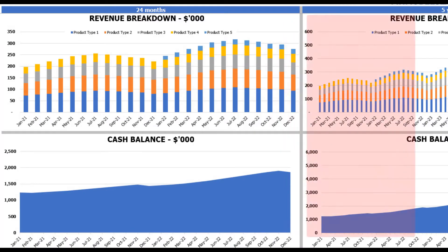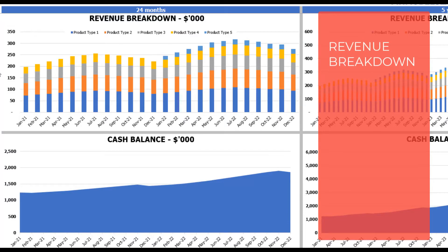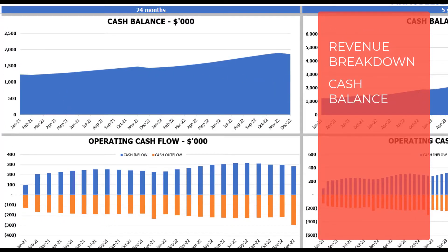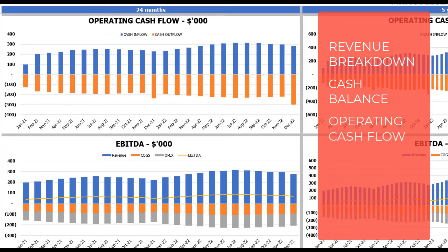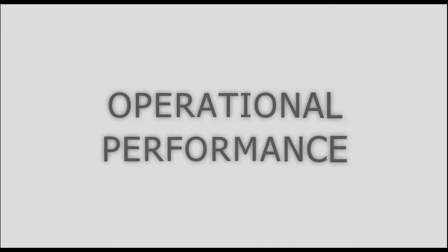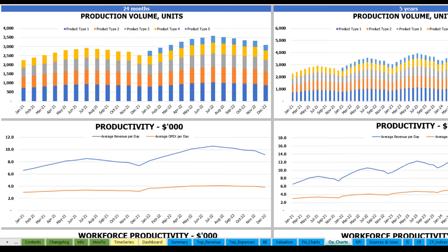On the financial charts tab you may see the main financial outputs in graphical form. On the left side you see charts for 24 months, and on the right side charts for five years or 60 months. The top charts show revenue breakdown by product type. The next charts show cash balance, then operating cash flow broken down by inflow and outflow, then the EBITDA breakdown — revenue, COGS and OpEx — with the resulting EBITDA value as a yellow line by month.